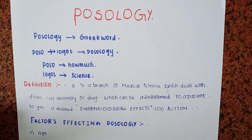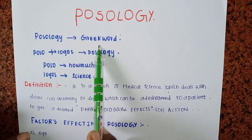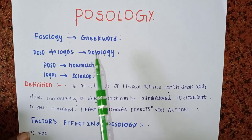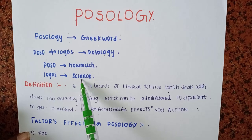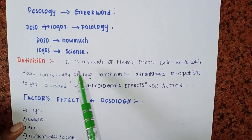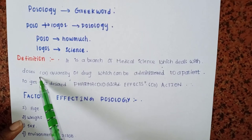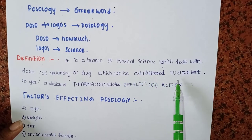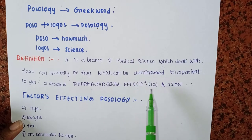So first, what is posology? Posology is derived from the Greek word — posos plus logos. Posos means how much, logos means science. The definition: it is a branch of medical science which deals with doses or quantity of drug which can be administered to a patient to get a desired pharmacological effect or action.